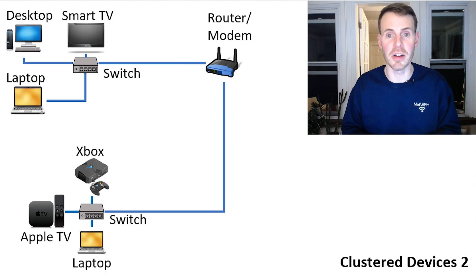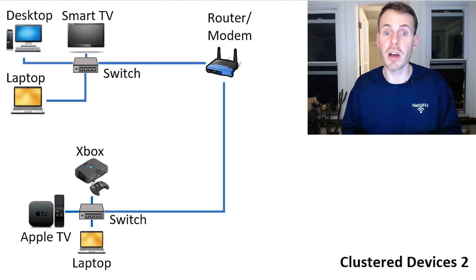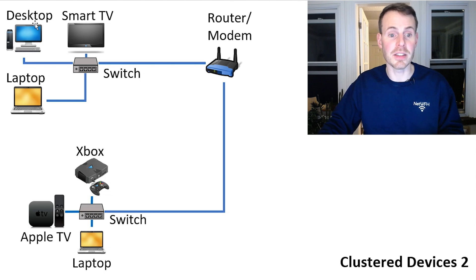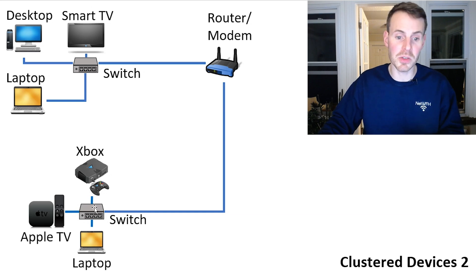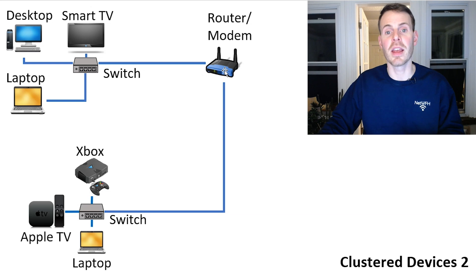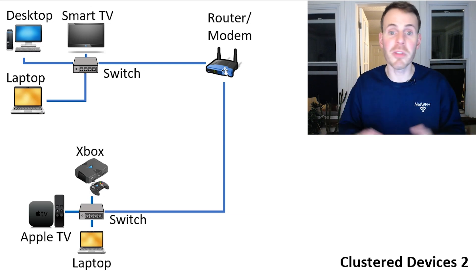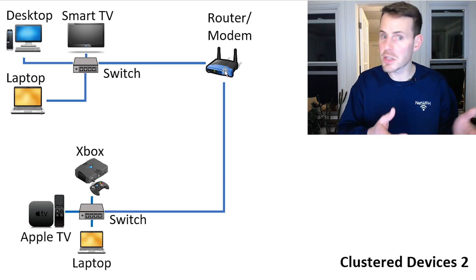Lastly, what if you have two clusters of devices that are far away from your router? In this scenario, you're better off getting two 5-port switches so you can connect the devices in one cluster to one switch and the other devices in the other cluster to the other switch. Then you only need two Ethernet cables going between your switches and your router, which simplifies cable management and allows all your devices to connect to the internet.